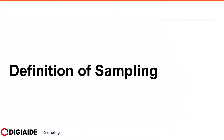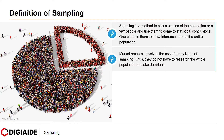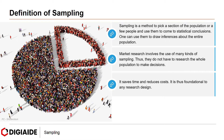Let's start with the definition of sampling. Sampling is a method to pick a section of the population or a few people and use them to come to statistical conclusions. One can use them to draw inferences about the entire population. Market research involves the use of many kinds of sampling, so they do not have to research the whole population to make decisions. It saves time and reduces cost, and is thus foundational to any research design.